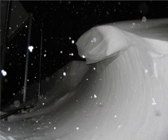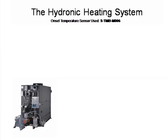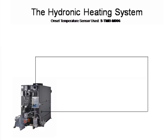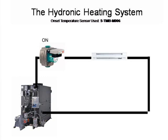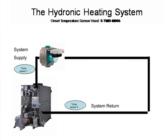Let's look at the critical sensor placements. The first is the system supply — this sensor shows us the actual supply temperature being delivered to the building by the heating system. The second sensor is placed on the system return pipe. The differential in temperature between these two points is a major indication of the real-time demand being placed upon the heating system, but we're not done yet by any means.